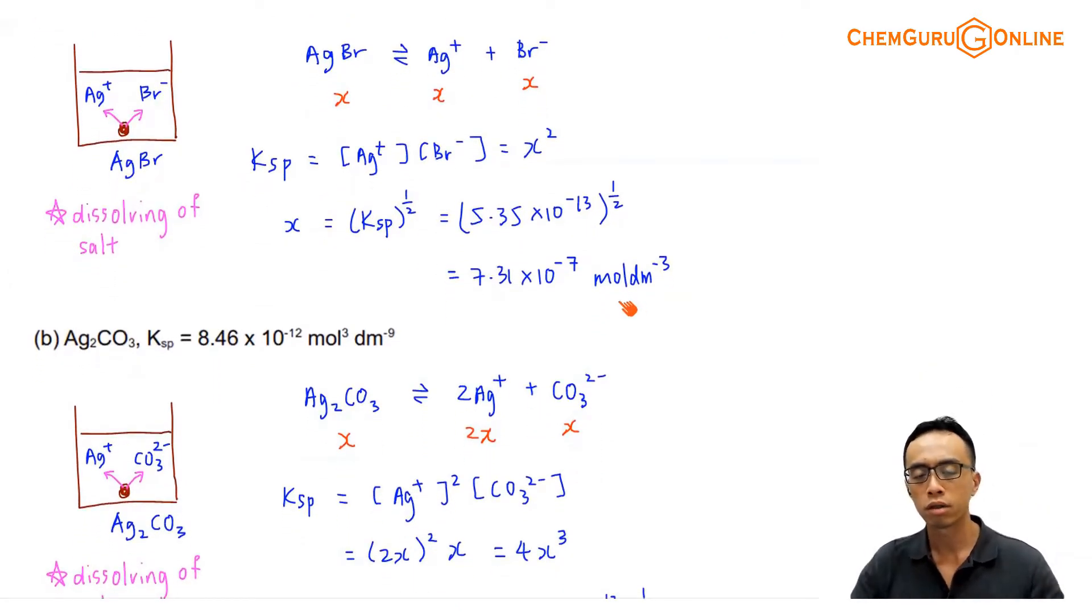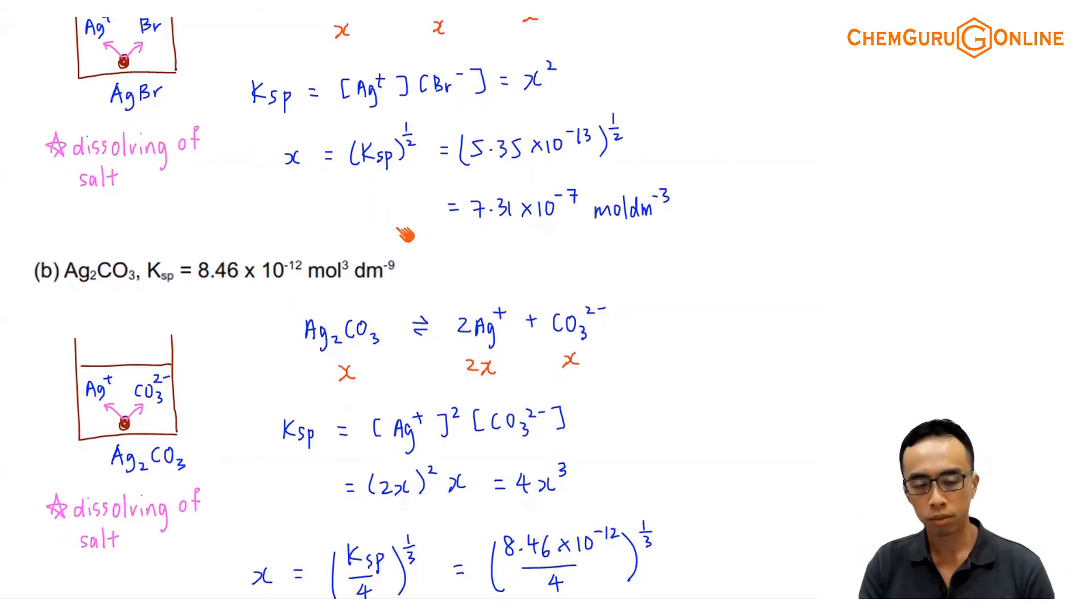Again, once we can write out the dissociation and the relationship between Ksp and solubility, some schools use S to represent solubility, it doesn't matter, you see which letter that you like, so I'll stick with X. So if you're given one term, you can find the other term. If you're given Ksp, you can find X, and vice versa. So A shouldn't be that much of a problem.